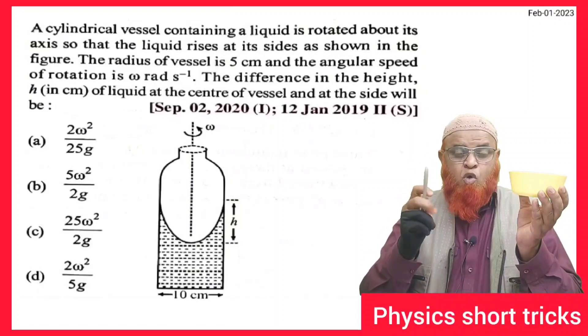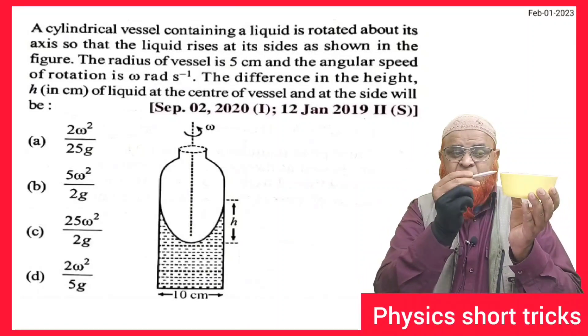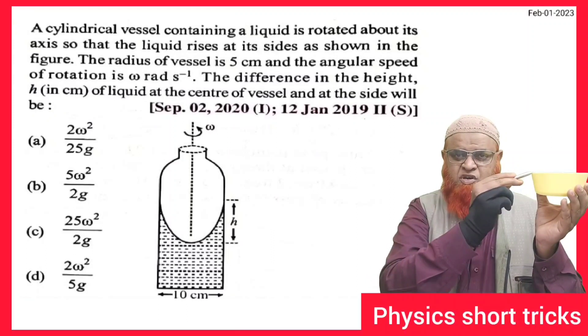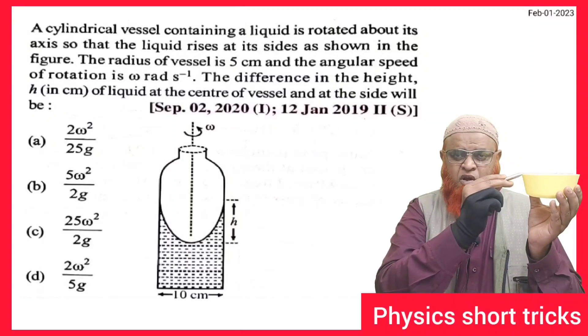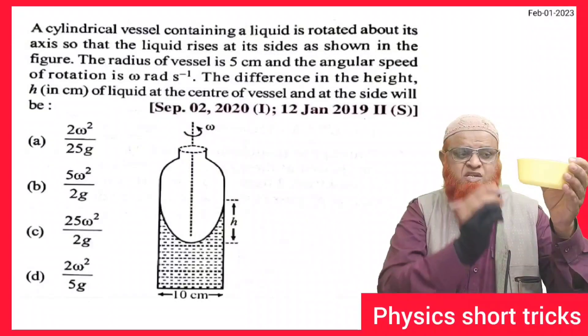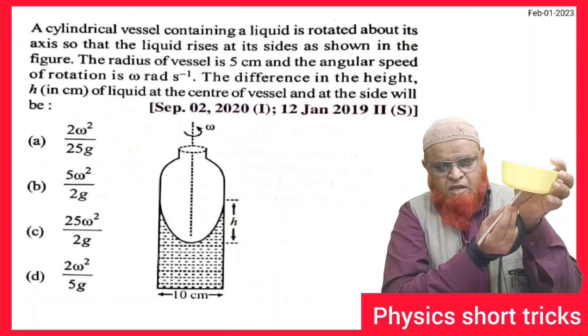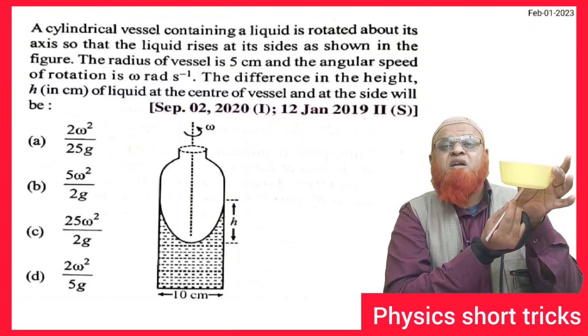Just imagine what will be the velocity of the particle which is present here. The velocity of the particle at this end, if you observe, is having maximum velocity. But the velocity at this end, even though this bowl is rotating, you can see that this point is going to be at rest.